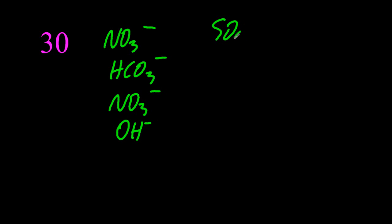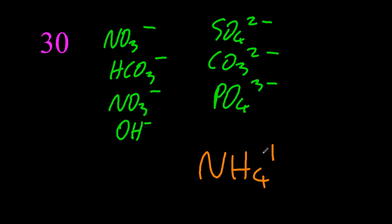These are the polyatomics you need to know, nitrate's there twice, and there's only one plus one you need to know, ammonium ion.